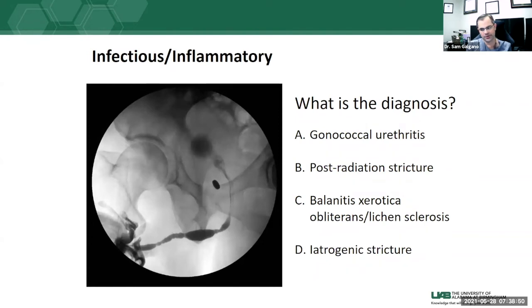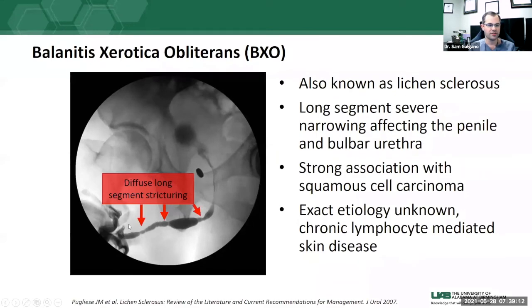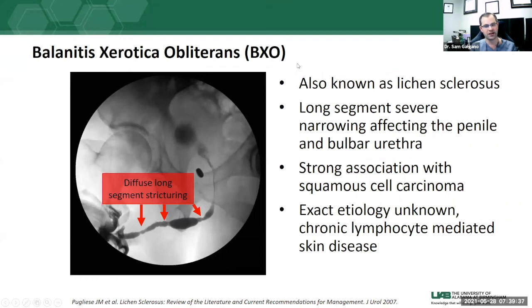In the infectious and inflammatory category: the diagnosis of irregular pan-urethral stricturing in this image is BXO, also known as lichen sclerosis. This is diffuse long-segment stricturing typically affecting the penile and bulbar urethra. It has a strong association with squamous cell carcinoma. The exact pathological cause is not known, but it is hypothesized to be a chronic lymphocyte-mediated skin disease affecting the urethra. This pan-urethral diffuse long-segment stricturing is characteristic of lichen sclerosis, previously known as BXO.